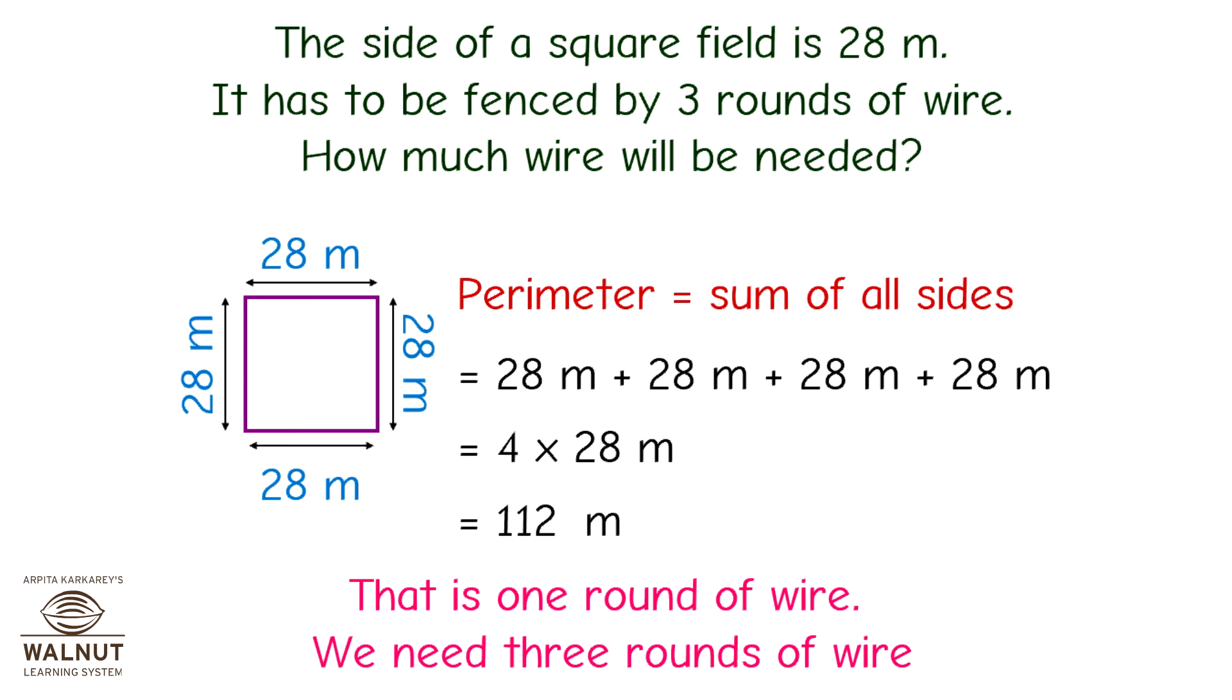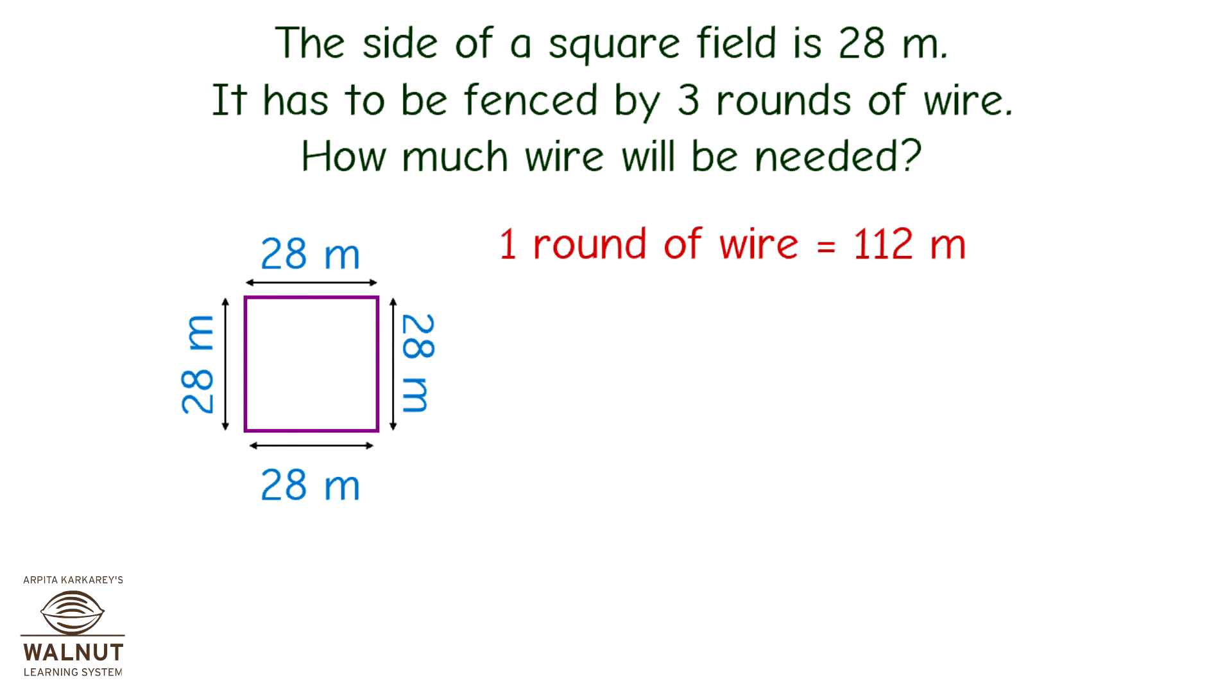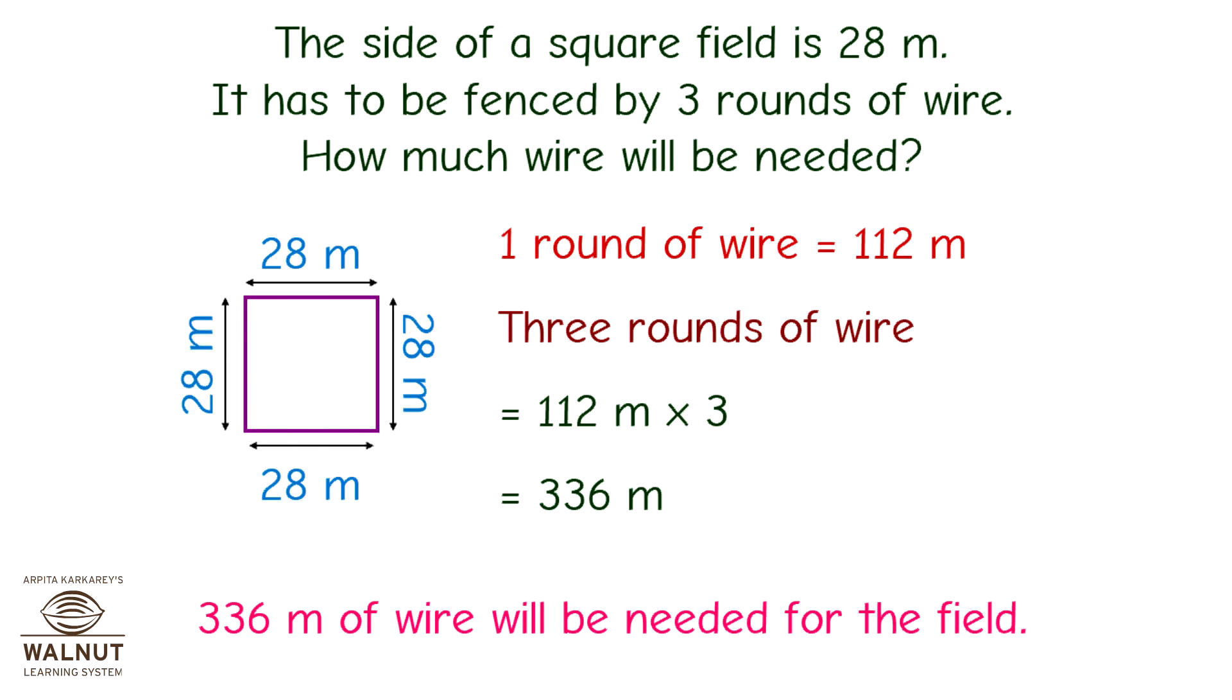We need three rounds of wire. One round of wire is equal to 112 meters. Three rounds of wire is equal to 112 meters multiplied by 3. That is equal to 336 meters. 336 meters of wire will be needed for the field.